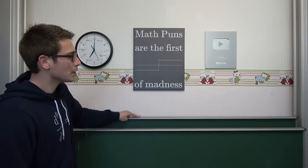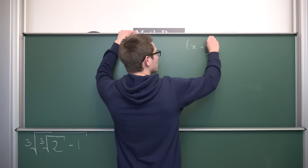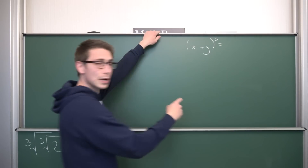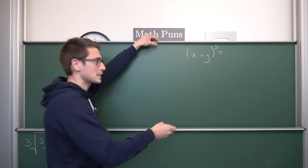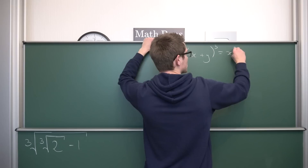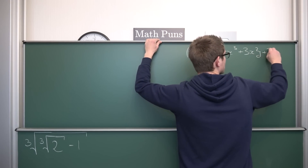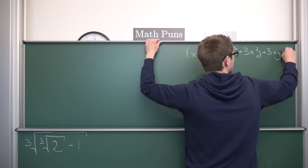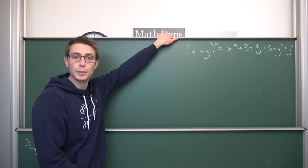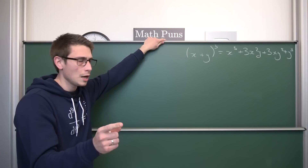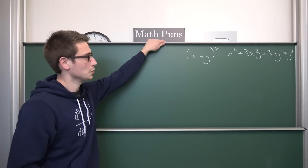First, I want you to remember what it looks like when we have (x + y) to the third power. This is just the binomial theorem following Pascal's triangle pattern. This results in x³ + 3x²y + 3xy² + y³. This is the binomial theorem and we are going to use it later. From this result we can actually derive a few more very nice results.